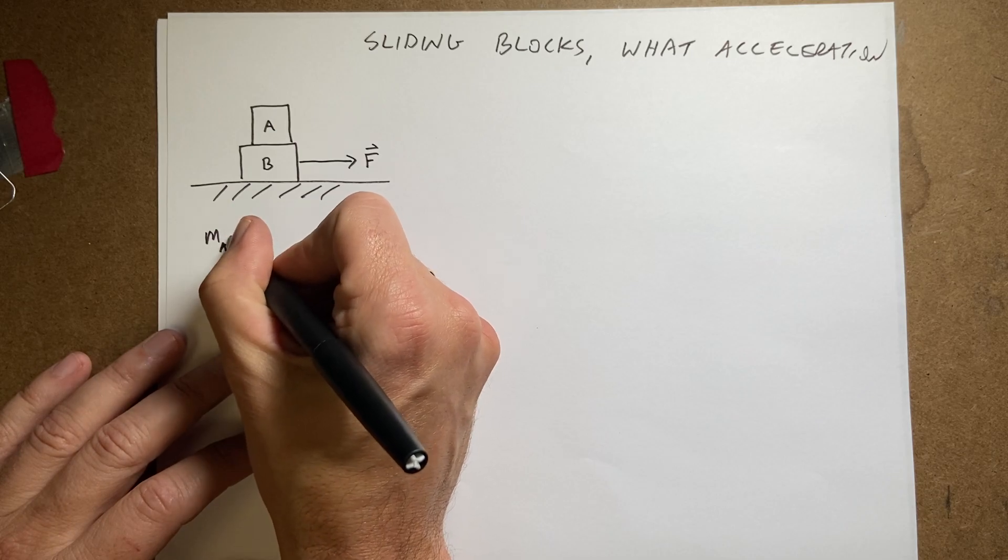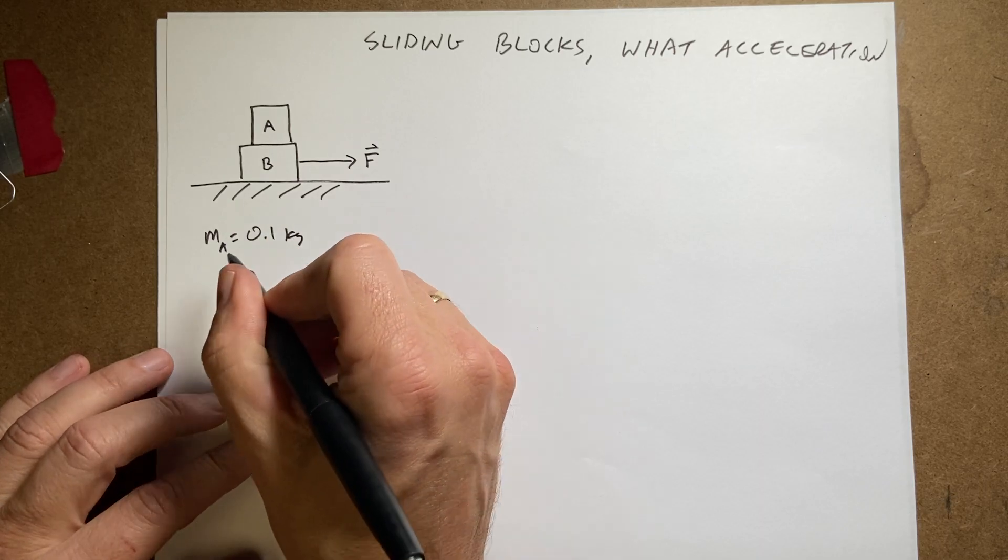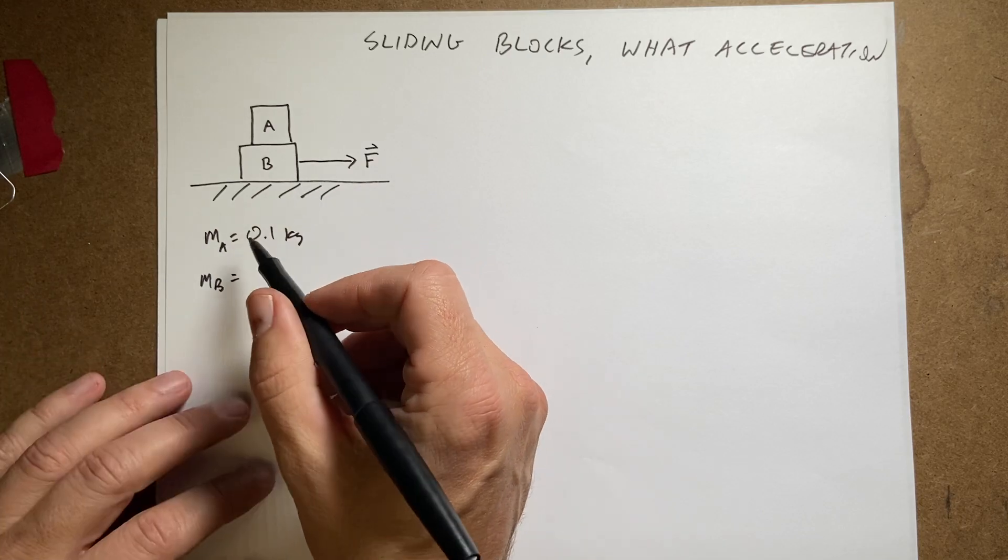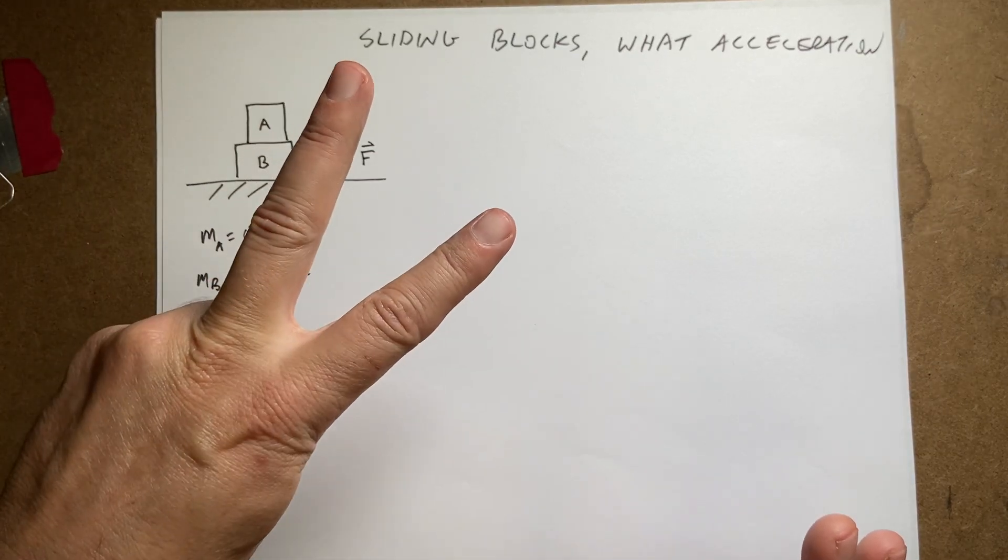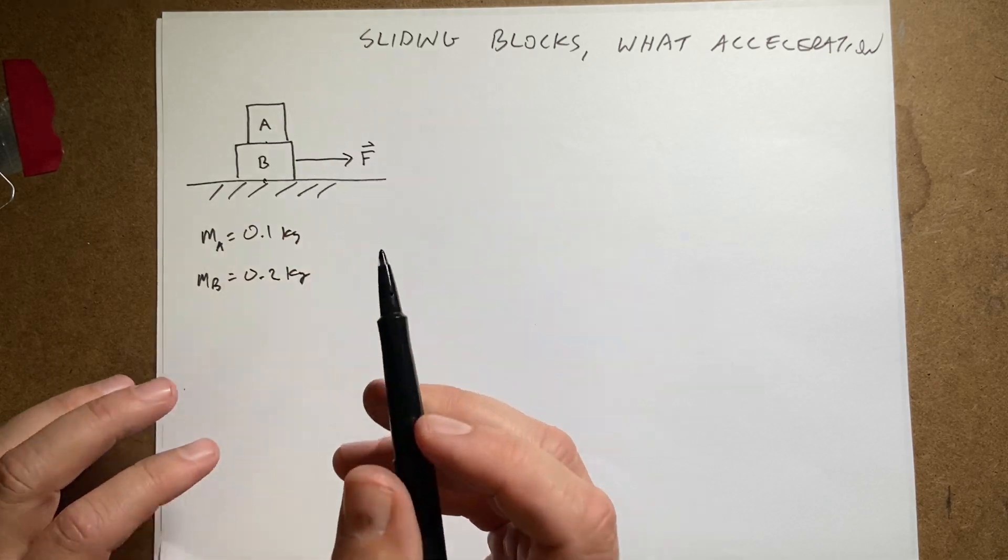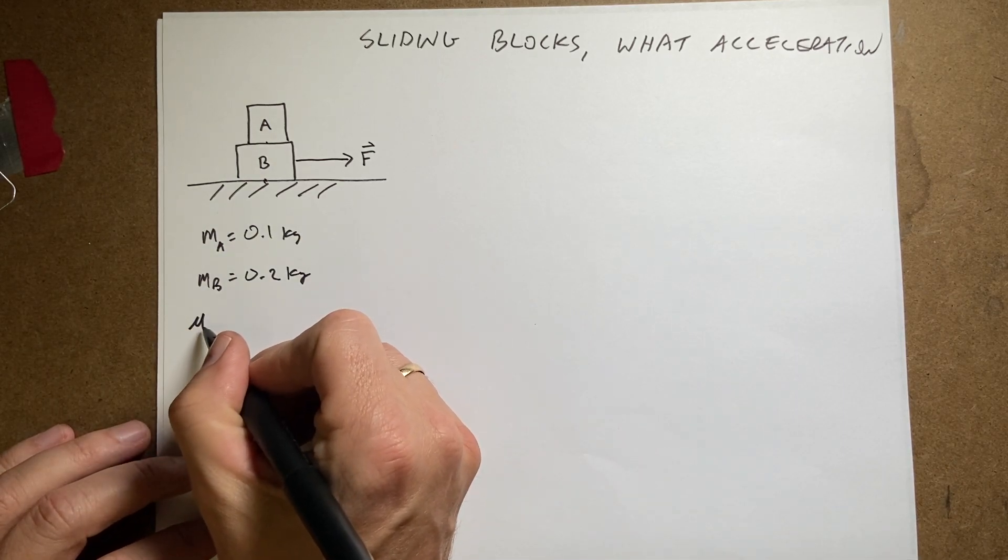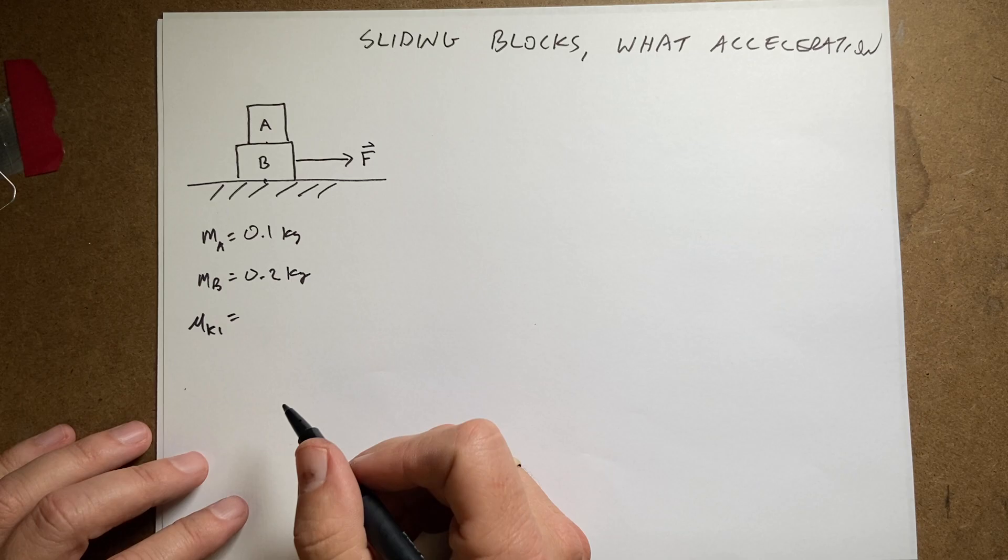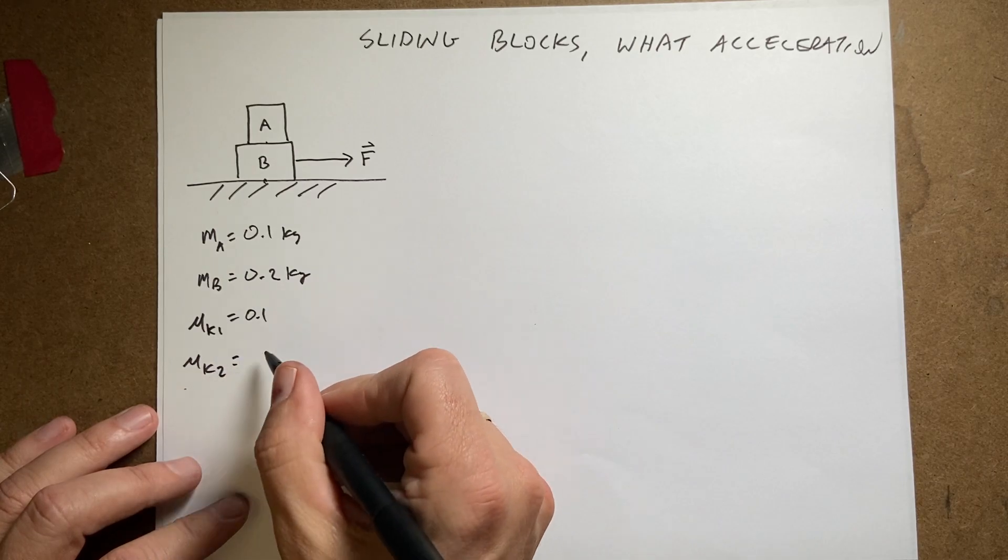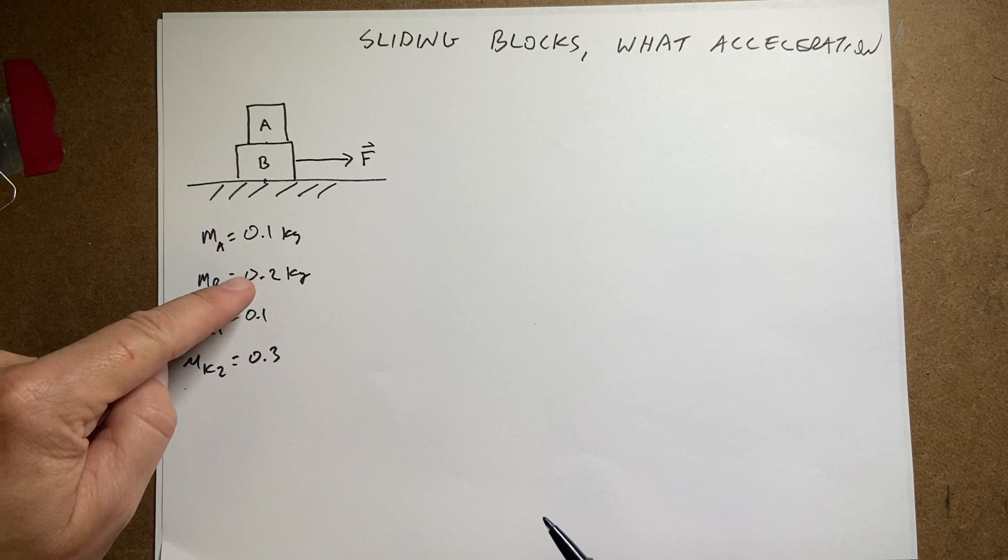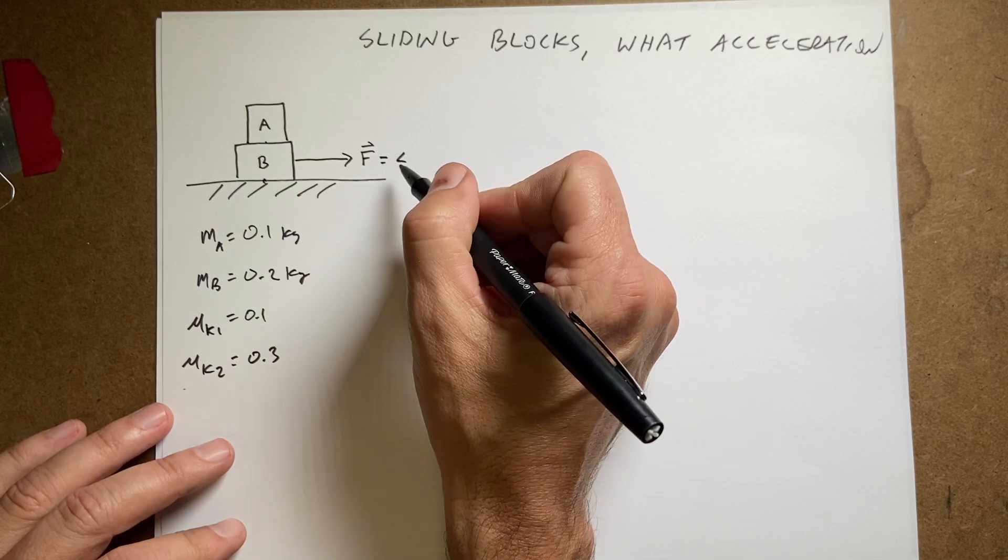I'm going to just make up stuff. Ma, the one on the top, has a mass of 0.1 kilogram. Mb has a mass of 0.2 kilograms. Now I actually have two surfaces. So I have two different coefficients. Let's say mu k1 equals 0.1. And mu k2 for the bottom surface is going to be 0.3. And then I pull with a force equal to 1 newton.